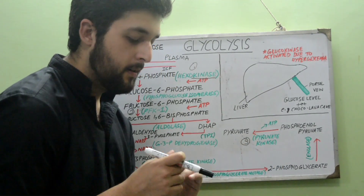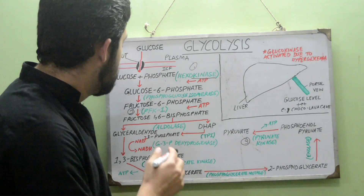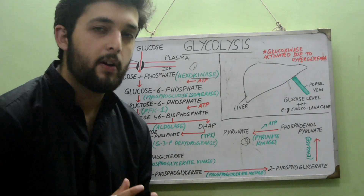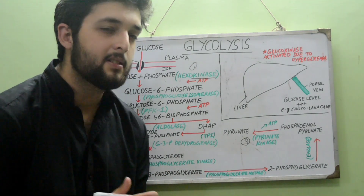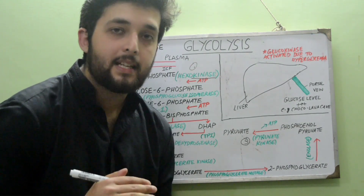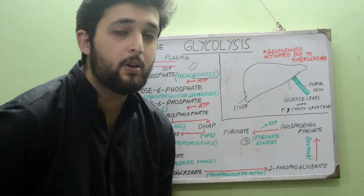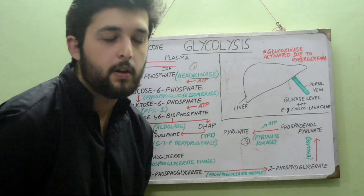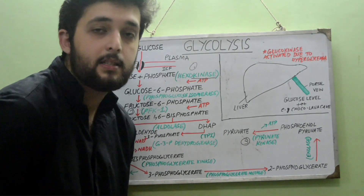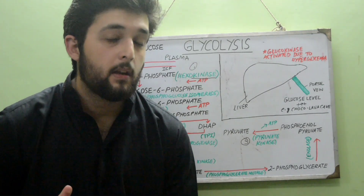PFK1 is the most important enzyme of glycolysis; hexokinase is the first rate-limiting enzyme and PFK1 is the second, followed by pyruvate kinase. These are the key rate-limiting determinants of glycolysis. Among PFK1 inhibitors: excess ATP in the cell — if there's already plenty of ATP, glycolysis is inhibited.